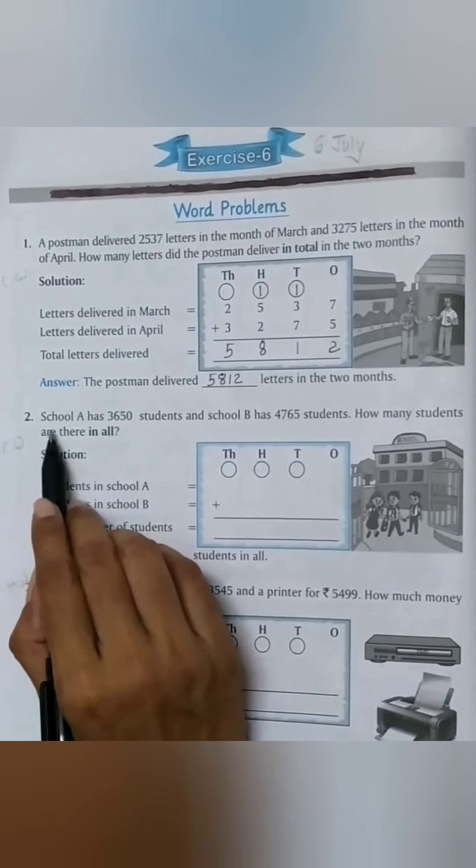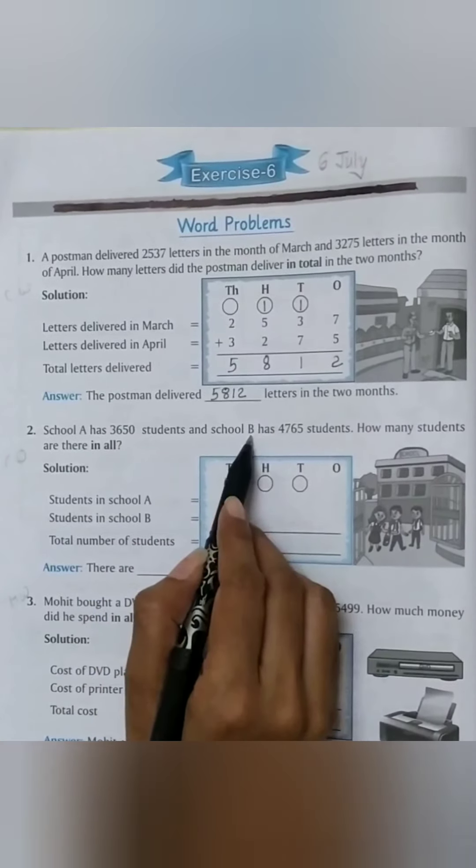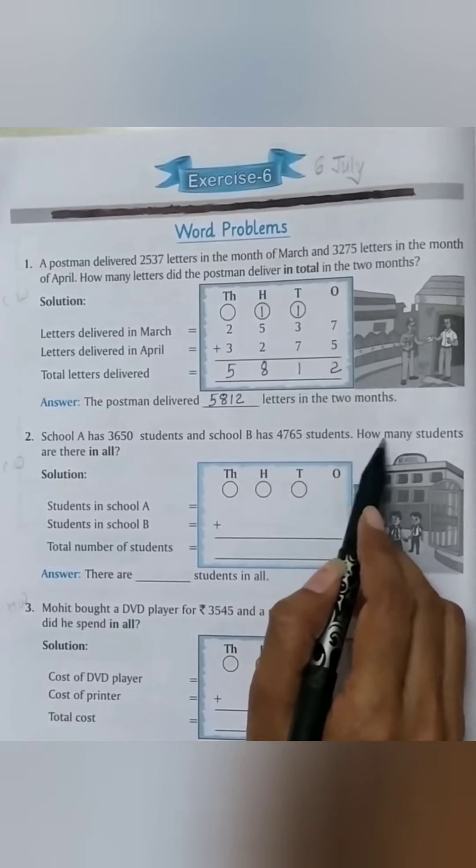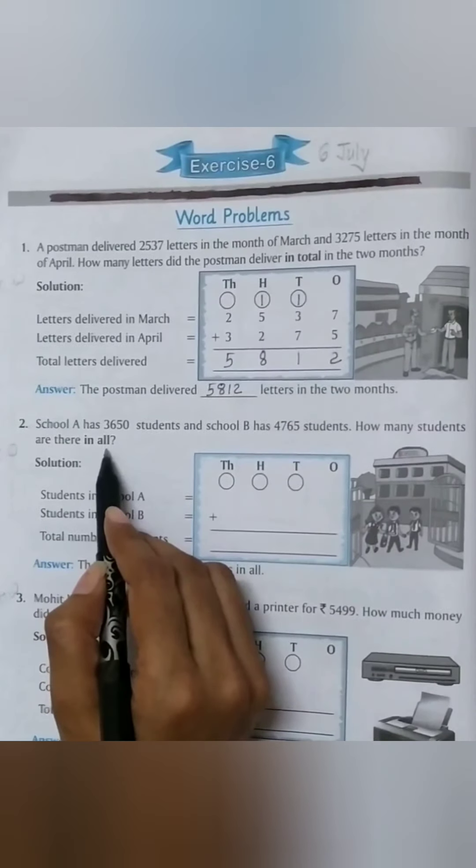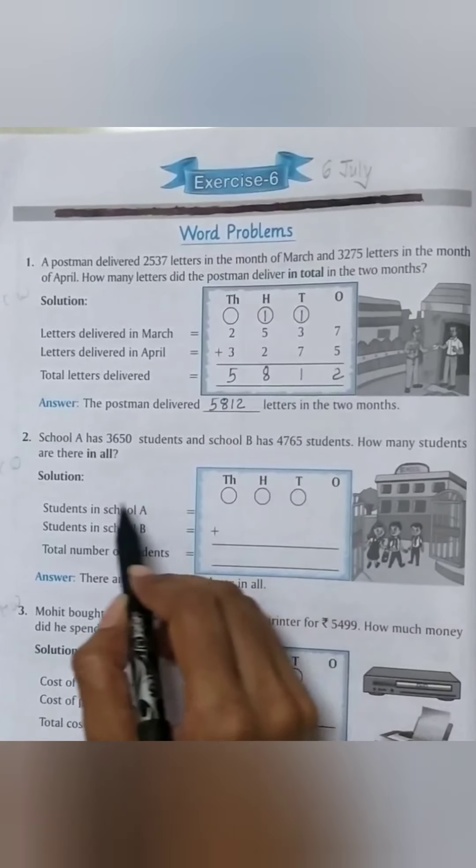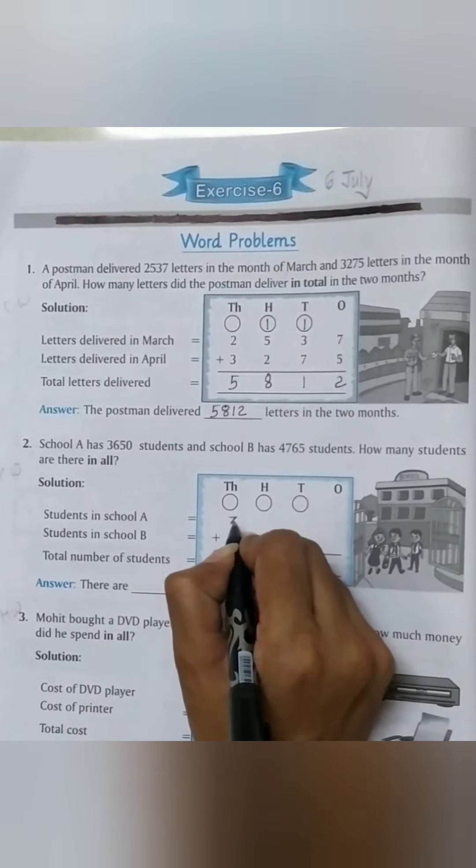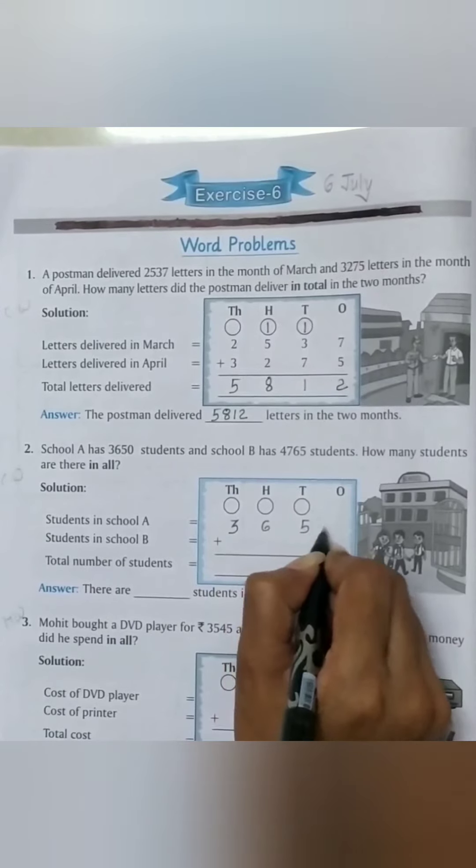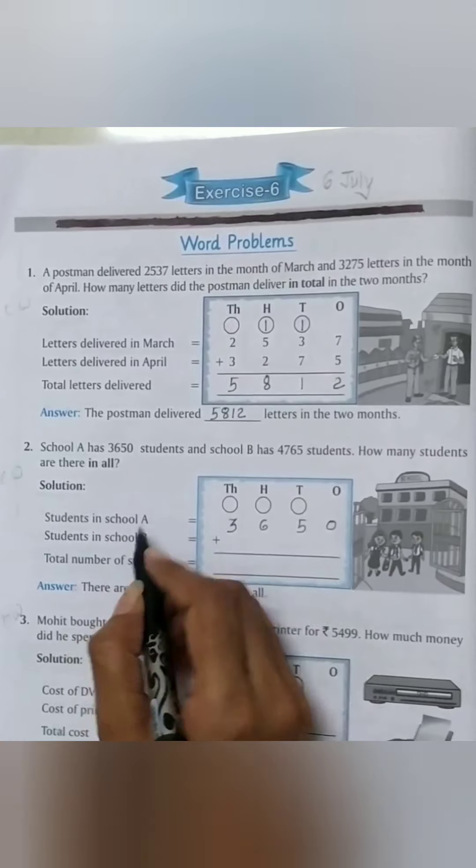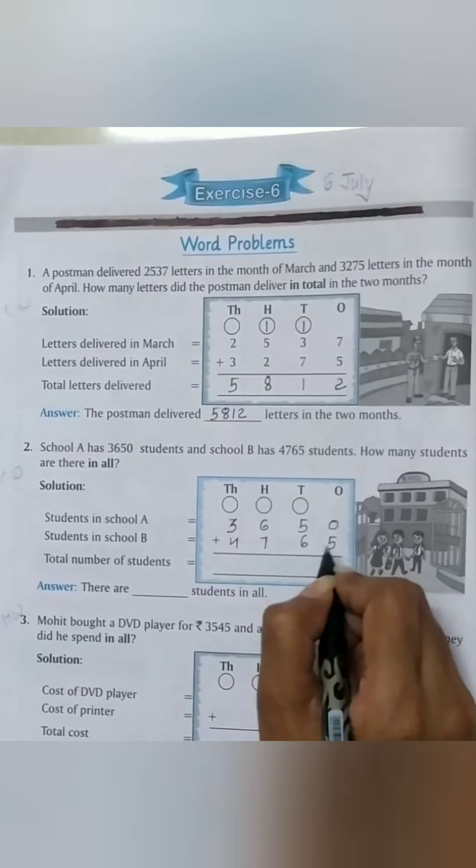Question No. 2: School A has 3650 students and School B has 4765 students. How many students are there in all? First we write the place values: thousands, hundreds, tens, and ones. Students in School A: 3650. Students in School B: 4765.